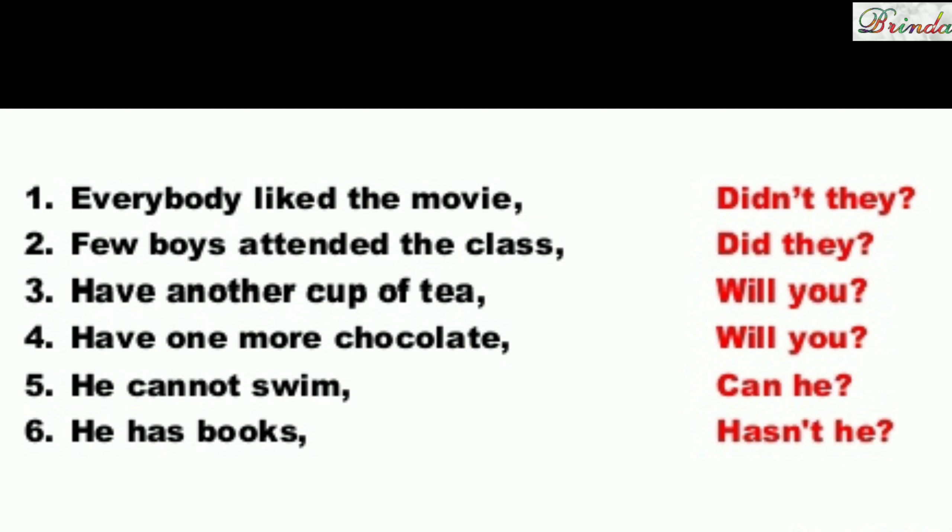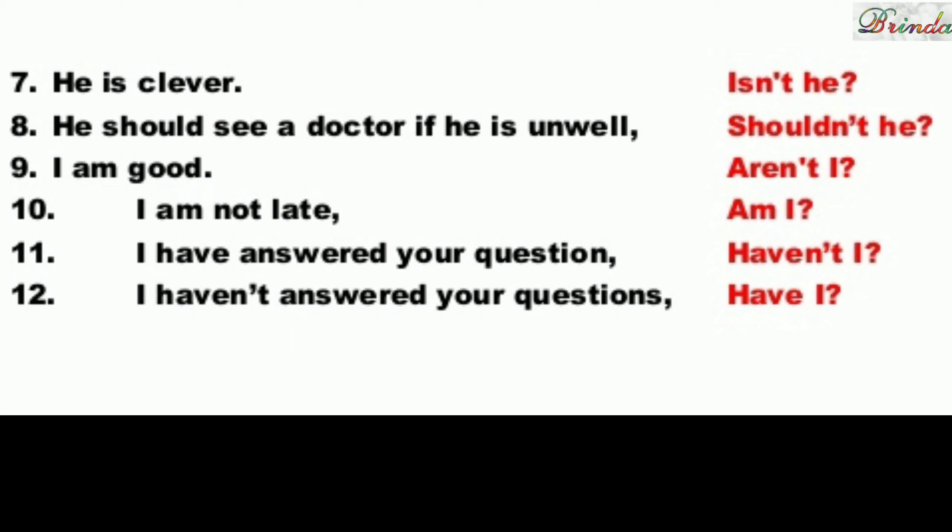He cannot swim — 'cannot' is negative, so the positive tag is: can he? He has books — 'has' is present, so 'has not' gives: hasn't he? He is clever — 'is' is present, so 'is not' gives: isn't he?